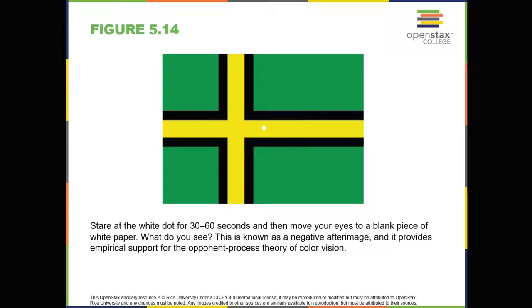The cones are responsive to three different wavelengths that represent red, blue, and green. But once the signal moves past the retina on its way to the brain, the cells respond in a way that is consistent with opponent process theory.